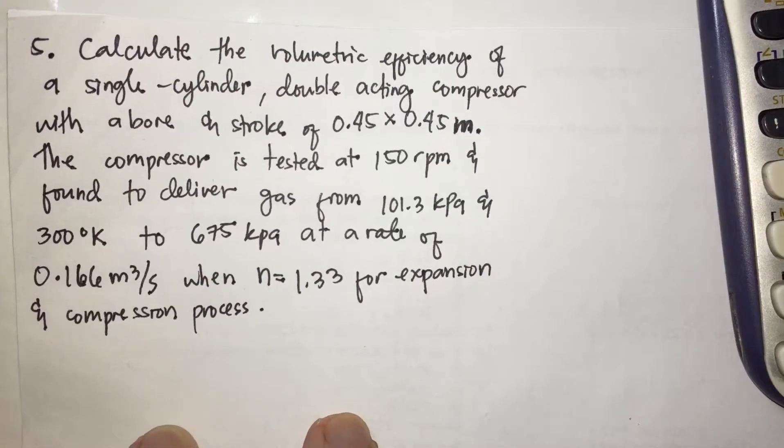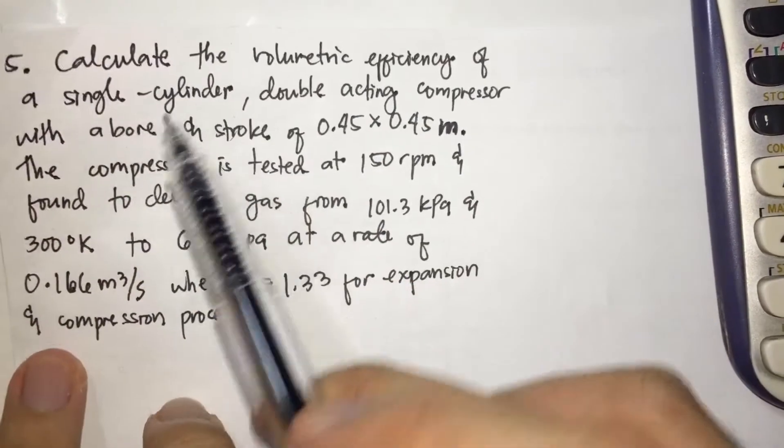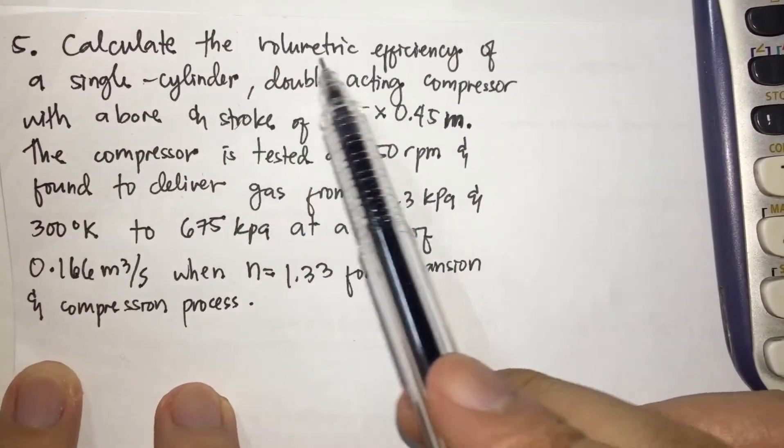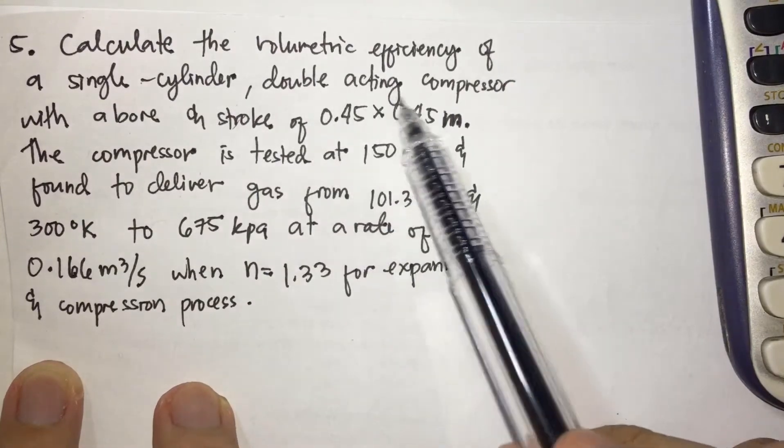So number five, example for a compressor. Calculate the volumetric efficiency of a single cylinder, double acting compressor.